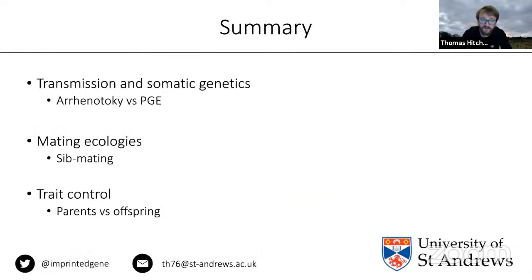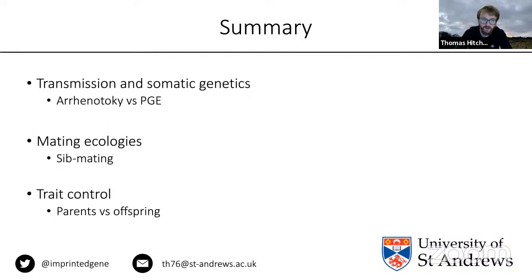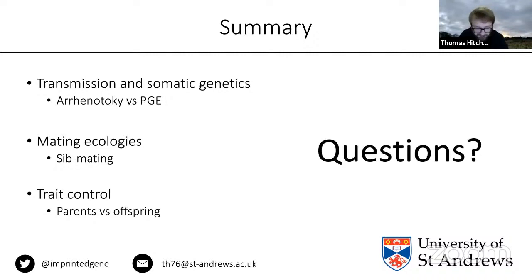In summary, we've considered three broad things affecting sexual antagonism: first, different combinations of transmission and somatic genetics — arrhenotoky versus male PGE; second, different mating ecologies and their effect on sexual antagonism; and finally, who controls the trait, which also alters the fate of sexually antagonistic alleles.